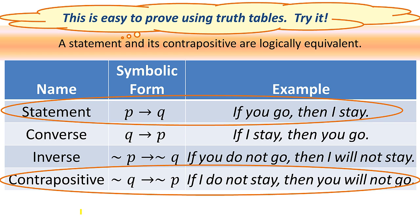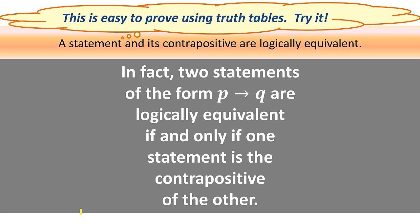You can try that yourself and see it's true — we won't do it here but you can easily verify it. In fact, two statements of the form p implies q are logically equivalent if and only if one is the contrapositive of the other. If they are not contrapositives of each other, they are not equivalent; if they are contrapositives, they are equivalent.